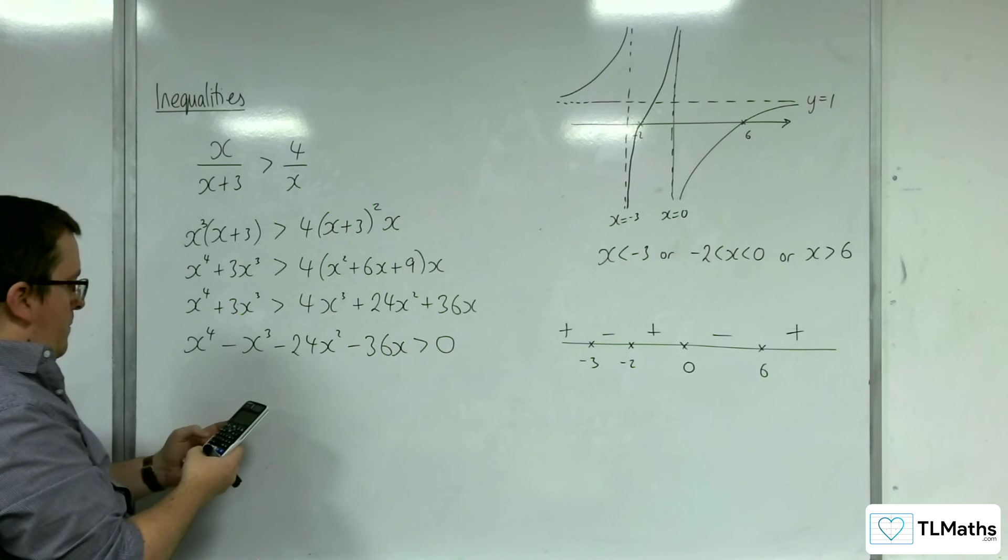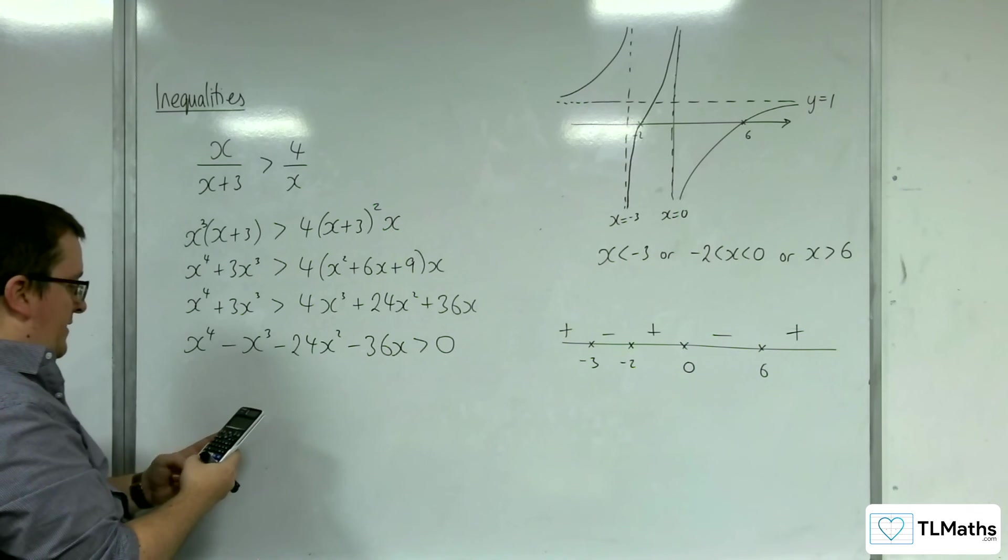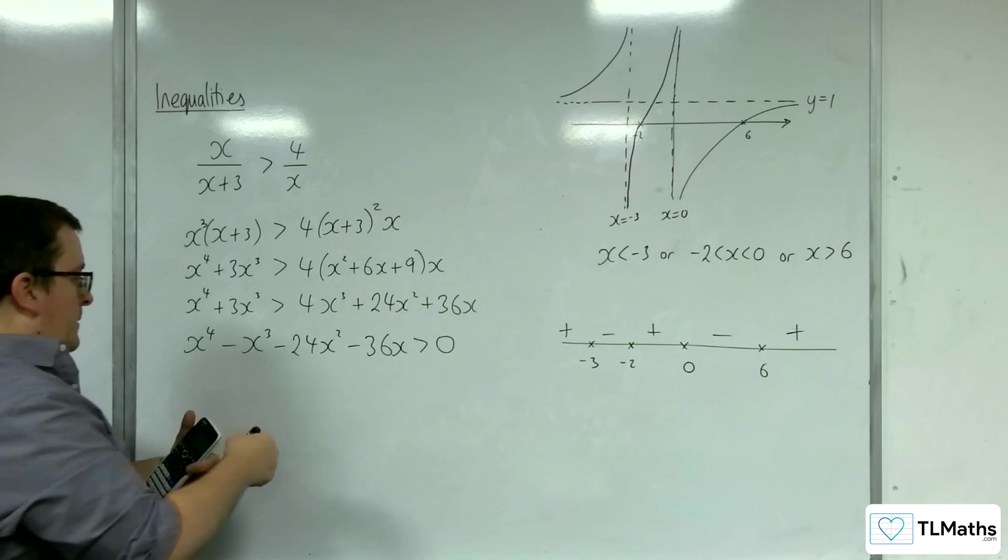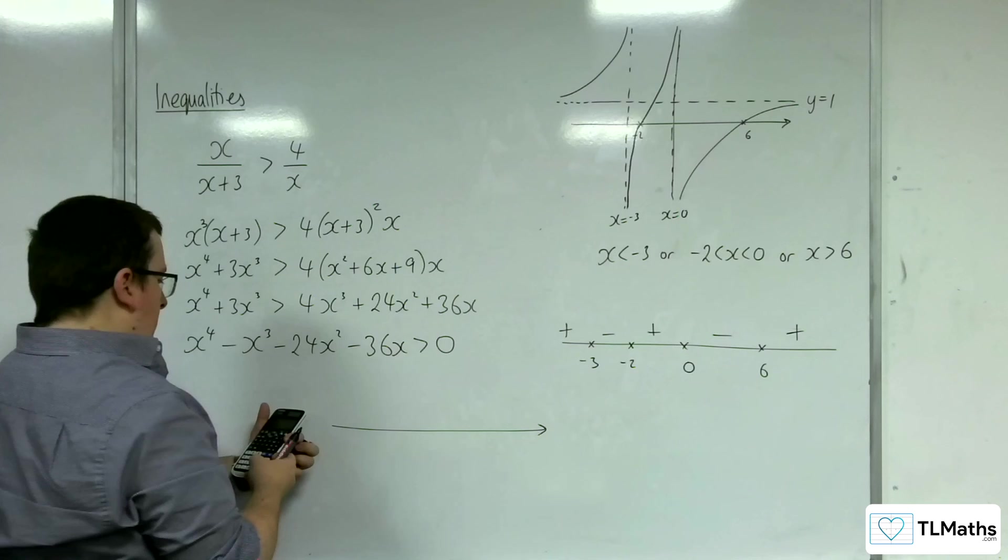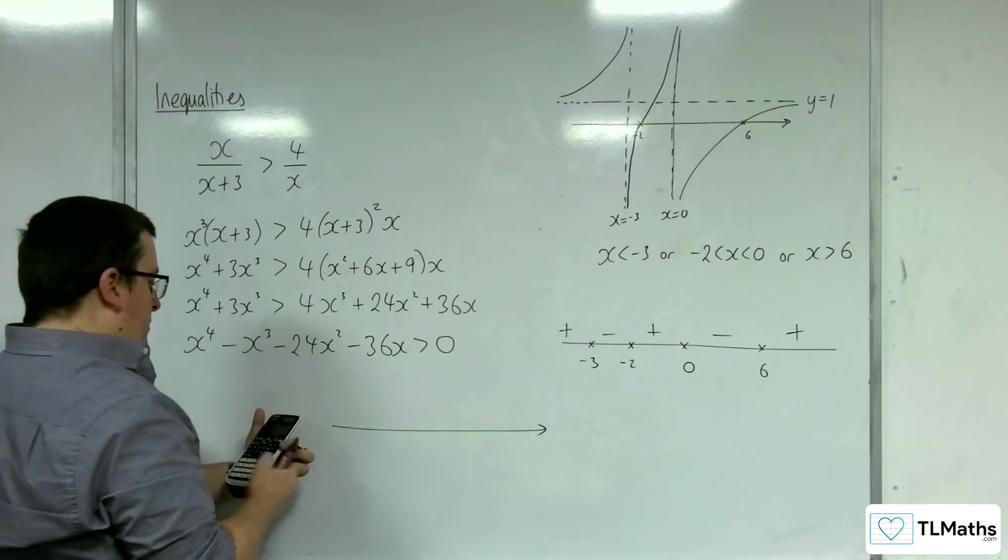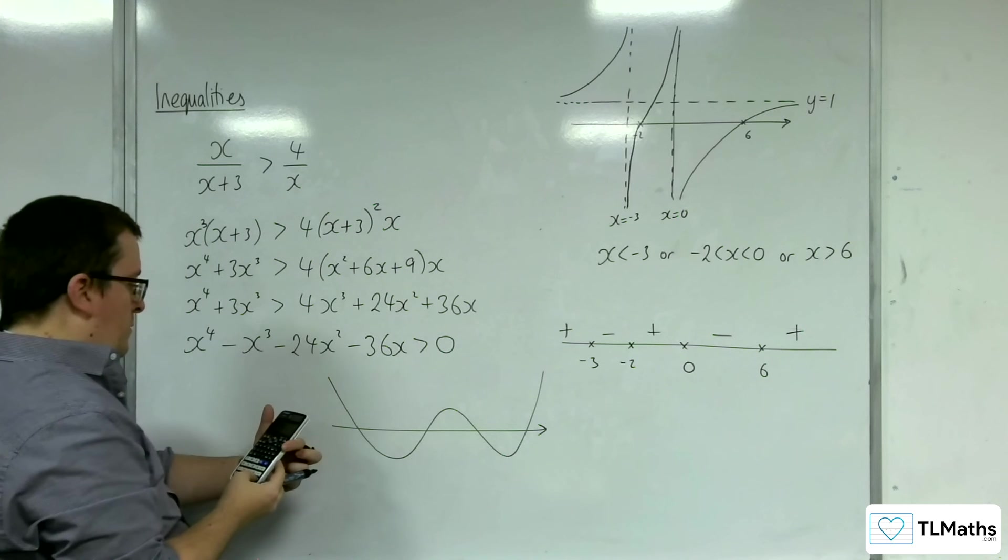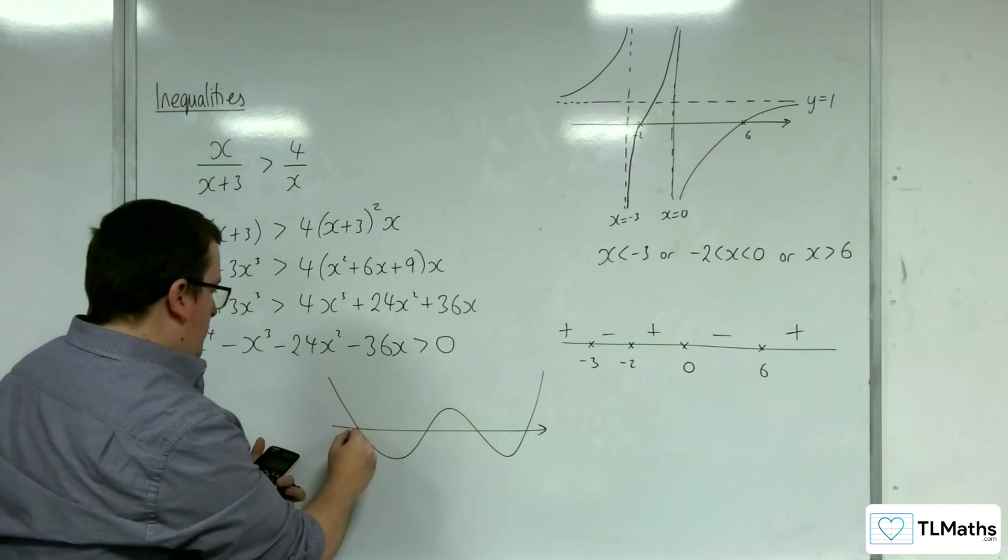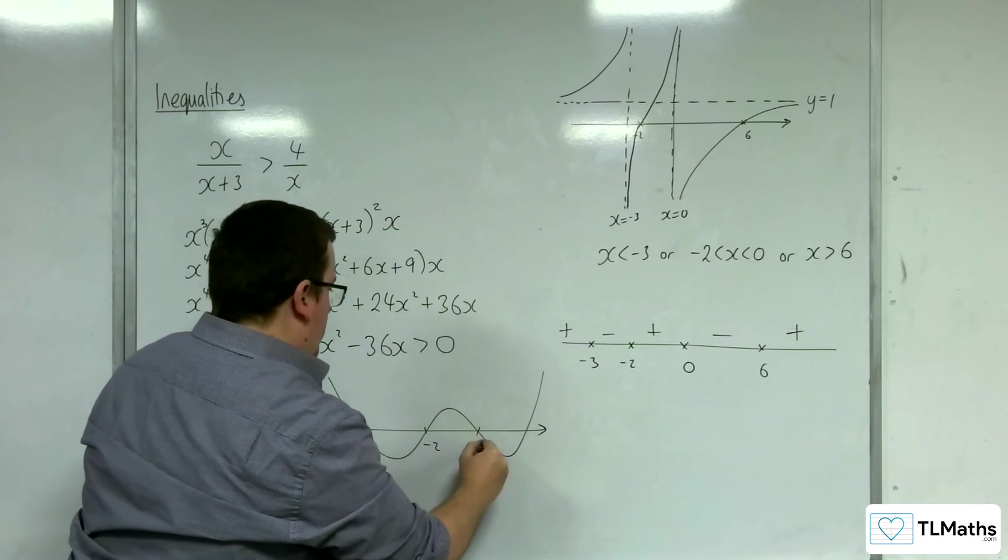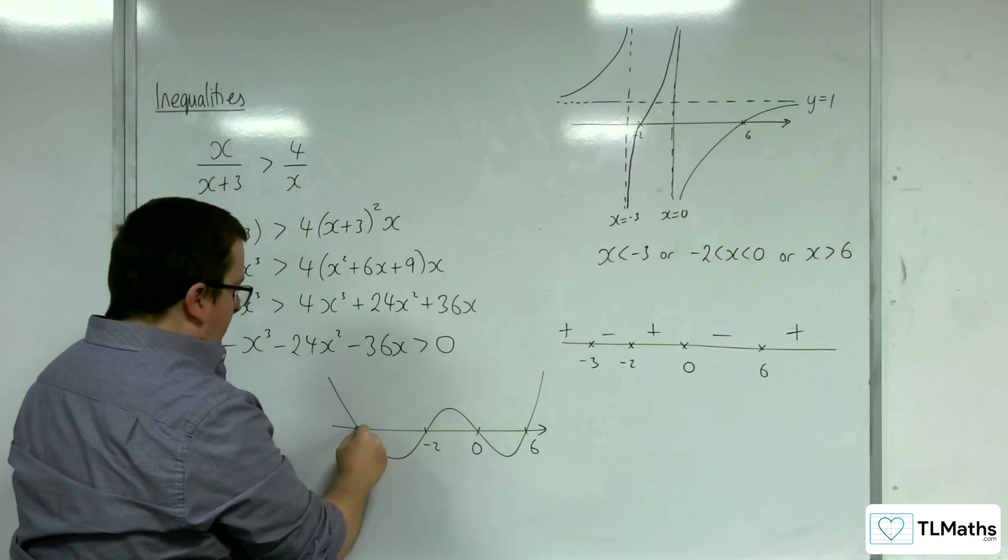So 1, minus 1, minus 24, minus 36, and 0. So we're going to have a quartic at 6, 0, minus 2, and minus 3. So what were they? We had 6, 0, minus 2, minus 3. So minus 3, minus 2, 0, and 6. Where is the graph above the x-axis?